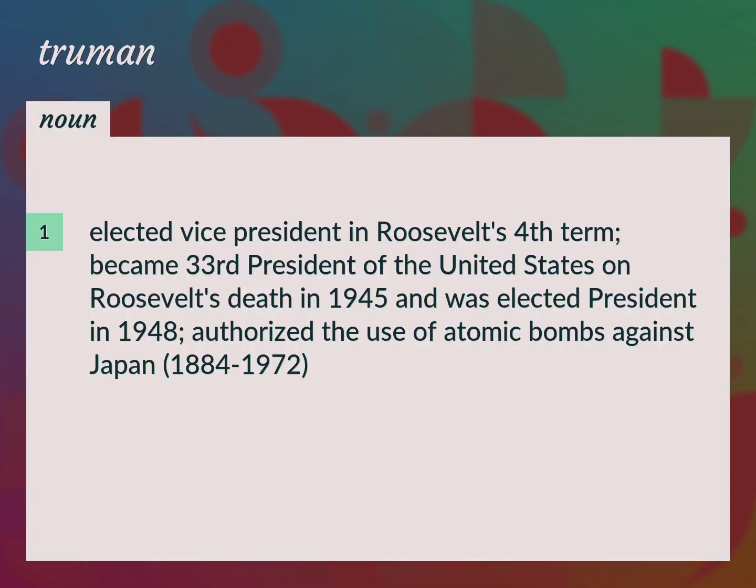Elected Vice President in Roosevelt's fourth term. Became 33rd President of the United States on Roosevelt's death in 1945 and was elected President in 1948. Authorized the use of atomic bombs against Japan. 1884–1972.